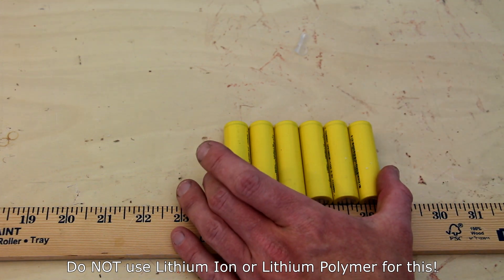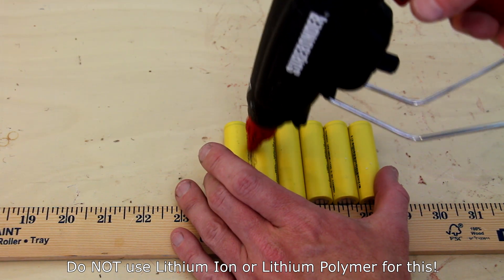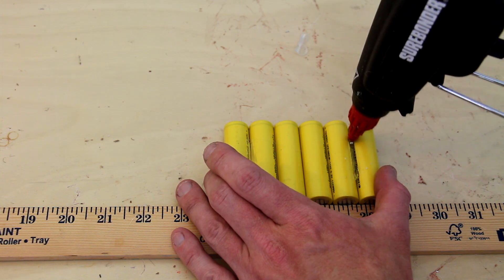To make a set of six in series, I'm simply straightening them out on a straight edge. In this case just using a ruler, but a wall works just fine, and then using hot glue to keep them in place.